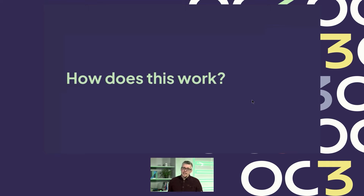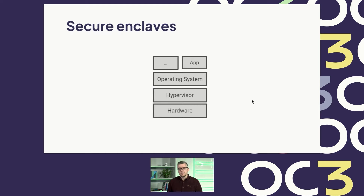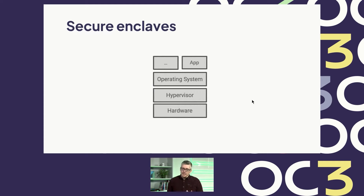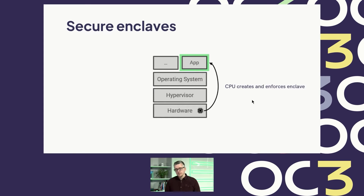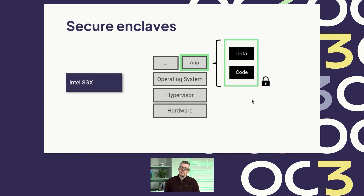So how does this work? It's a hardware-based technology, and there are essentially two foundations. The first are secure enclaves, which was the first form of confidential computing out there in the market. In secure enclaves, an application can ask the CPU to isolate it from the infrastructure — like from the operating system, from the hypervisor and so forth. The CPU will isolate the application on a logical level and encrypt the application's code and data in memory.